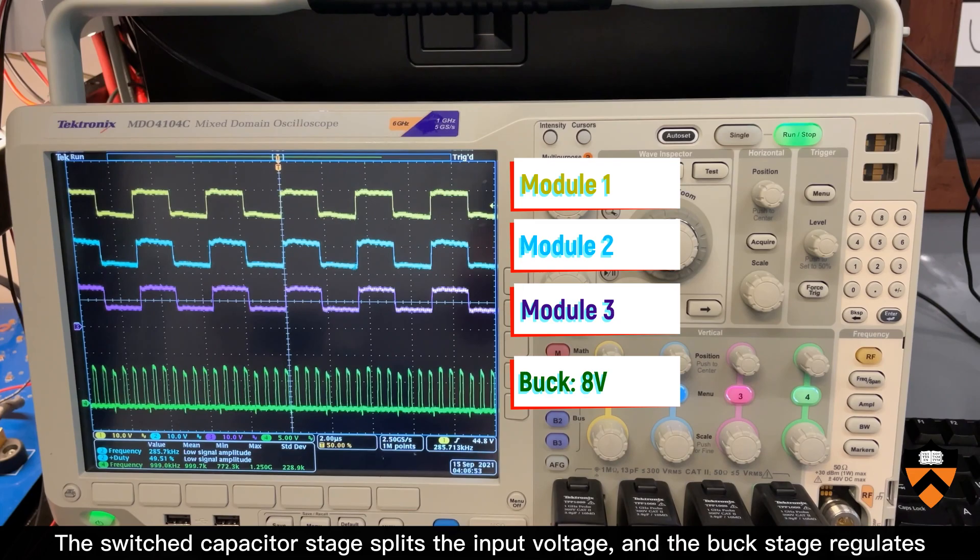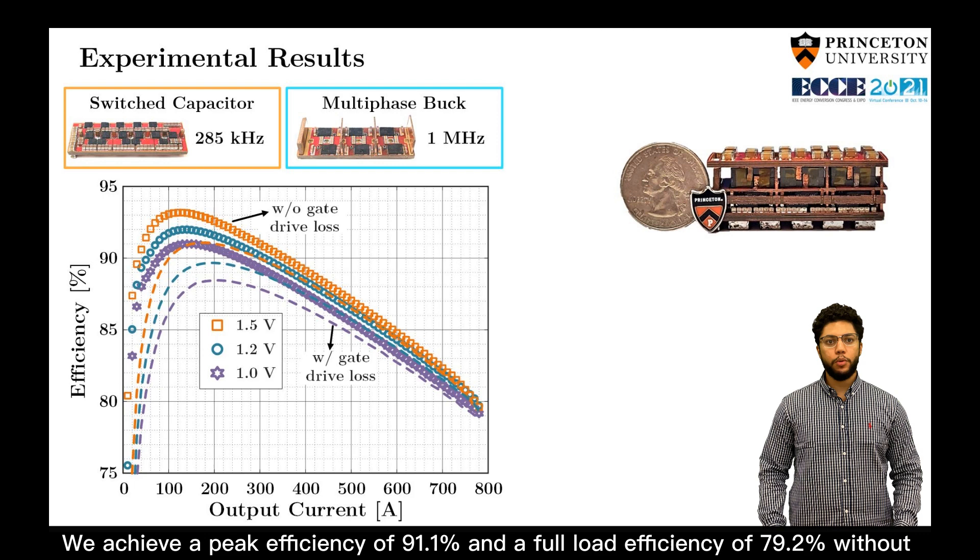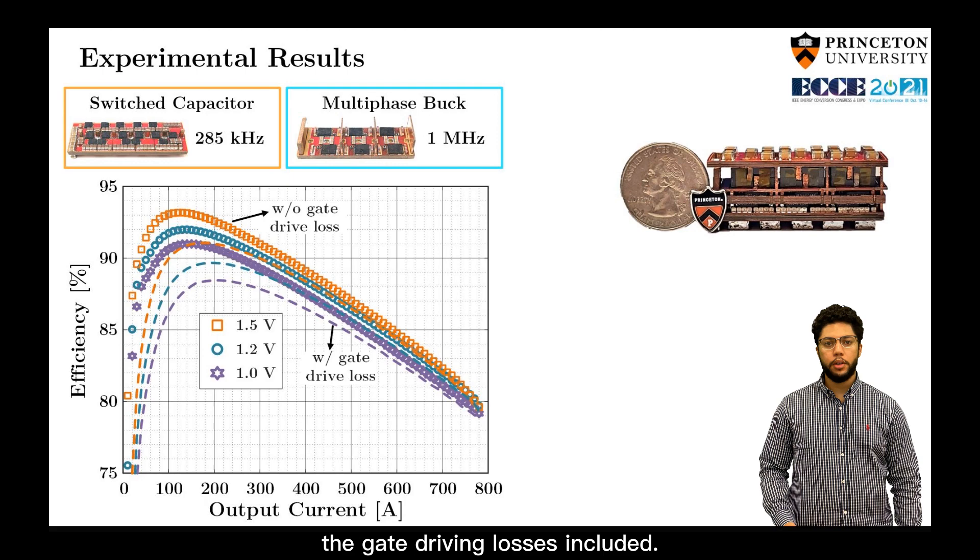The switch capacitor stage splits the input voltage and the buck stage regulates the output voltage. We achieve a peak efficiency of 91.1% and a full load efficiency of 79.2% without the gate driving losses included.